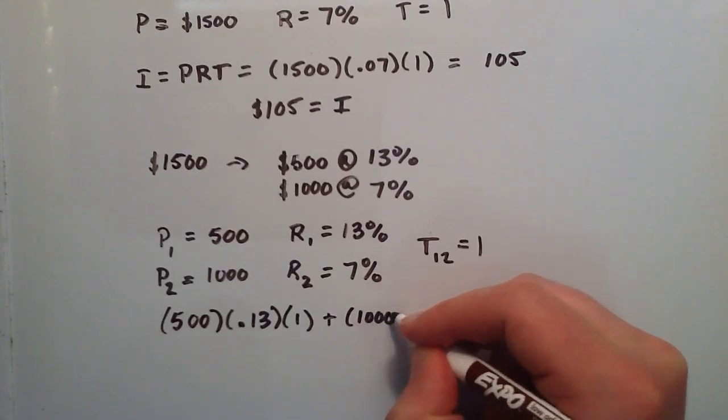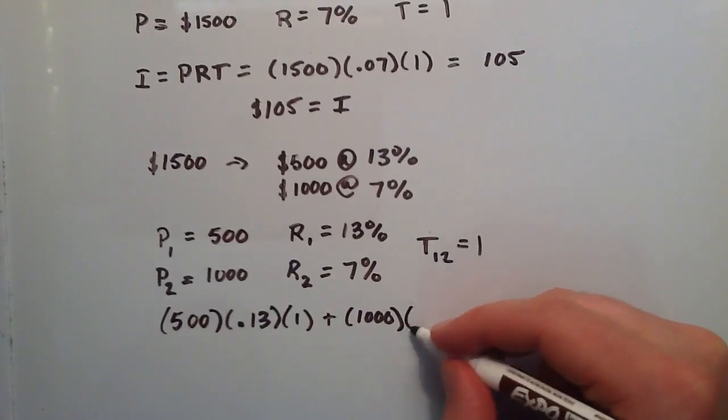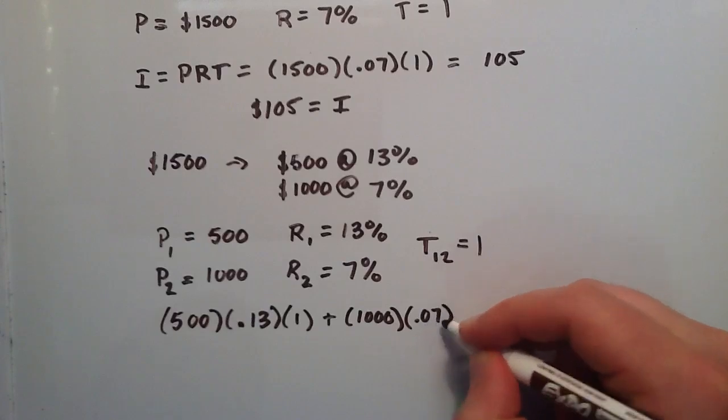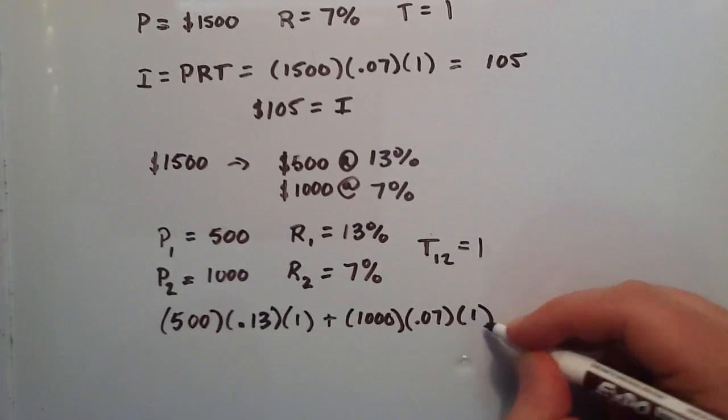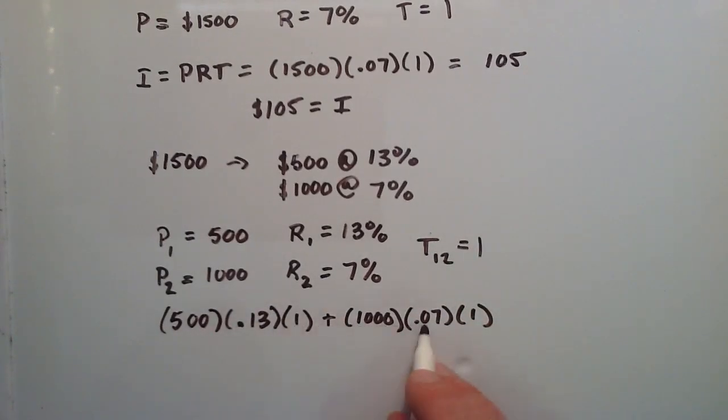And then we just add that to the second investment. So the principal of the second investment, our P is 1,000, our R is 0.07, and our T is 1. So we have P times R times T plus P times R times T, two separate interests that are made off of two different investments.